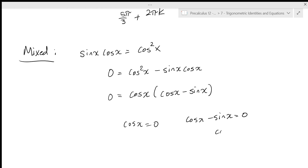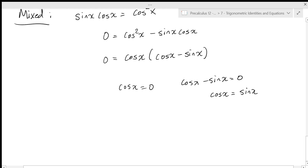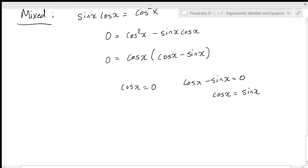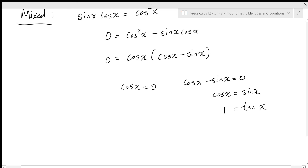Factor out a common factor of cosine x: zero equals cosine x times (cosine x minus sine x). So we have two equations: cosine x equals zero, and cosine x minus sine x equals zero, which rearranges to cosine x equals sine x. Now, strangely, I'm going to divide both sides by cosine x. Here cosine x and sine x can't both be zero at the same time, so dividing is safe, and I get one equals tan x.